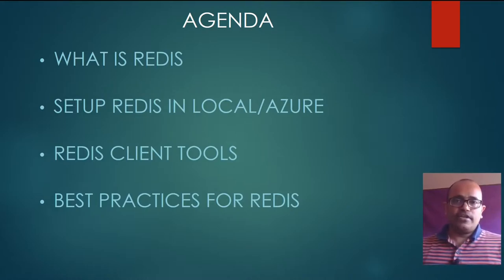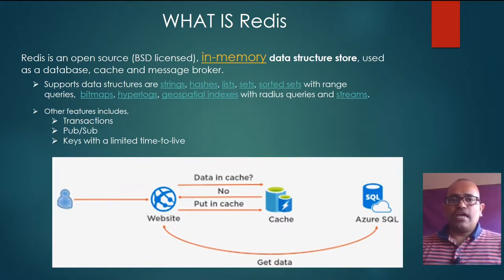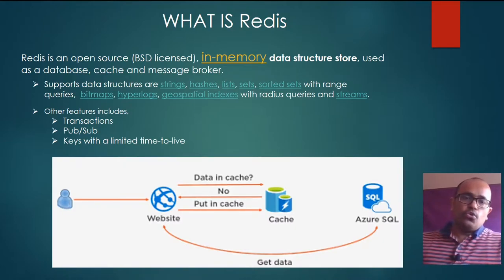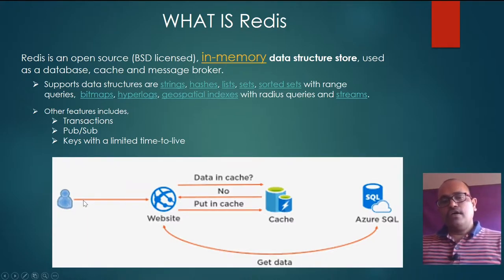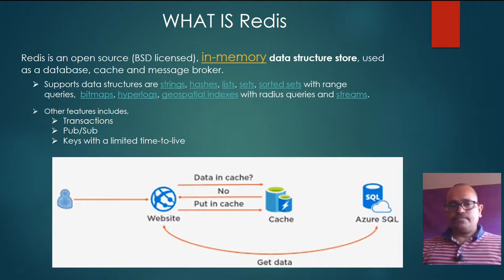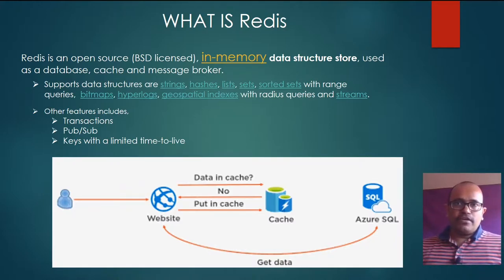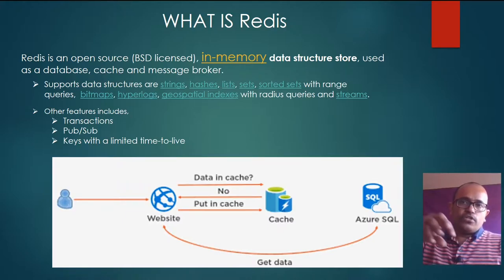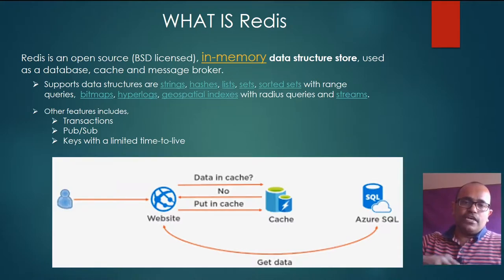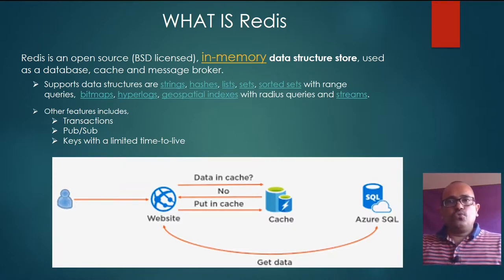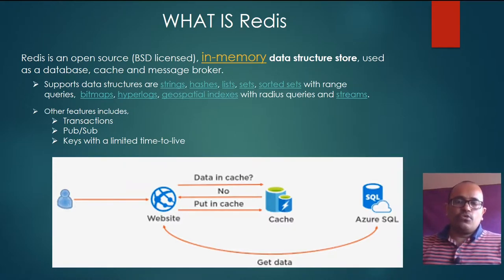Redis is an open source, in-memory data structure store used as a database, cache, and message broker. Looking at the normal flow of website access: when a user tries to access your website, data comes from the database - it may be SQL Server or others. In some scenarios you might implement a normal cache for non-transactional data, where data updates happen very rarely. Instead of hitting the actual database, you put that data into cache and re-utilize it, reducing the round-trips between your database and website to improve application performance.